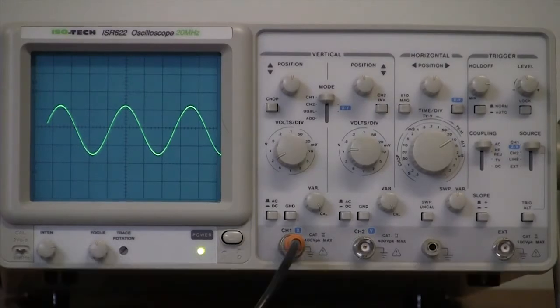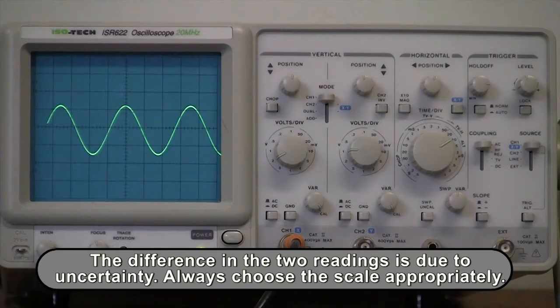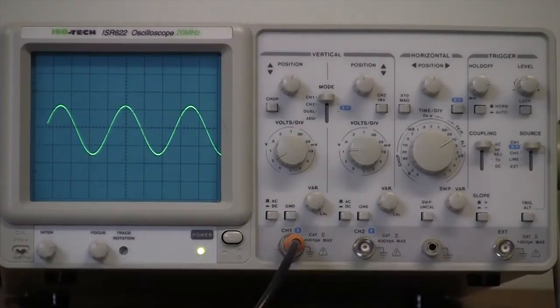The difference in the two readings is due to uncertainty. Always choose the scale appropriately. Make sure that the signal spans as much of the screen as possible, while still allowing you to measure both peaks.